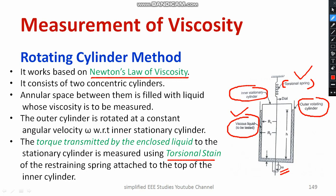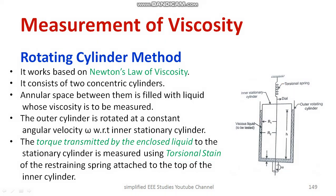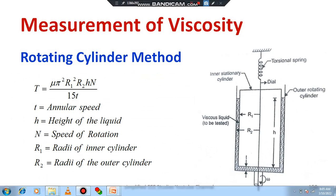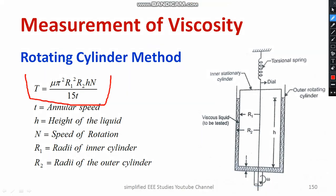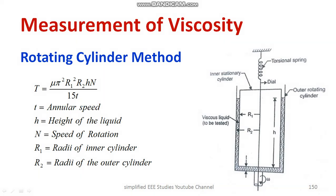You need to rotate the outer cylinder at an angular speed of omega. The torque will be transferred from the outer cylinder to the inner cylinder through the liquid whose viscosity needs to be measured. You are able to measure the torque using the torsional spring setup. The equation is: T = mu × π² × r1² × r2 × h × n / (15t), where r1 and r2 are the radii of the inner and outer cylinders, n is the speed of rotation, h is the height of the liquid, and t is the angular speed. Omega equals 2πn/60. Using this equation, you can compute the torque, which is directly proportional to viscosity.